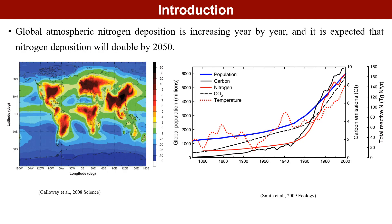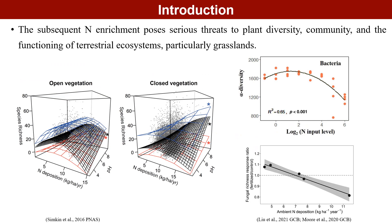Global atmospheric nitrogen deposition is increasing year by year, and it is expected that nitrogen deposition will double by 2050. Nitrogen enrichment caused by nitrogen deposition poses a serious threat to plant diversity, communities, and the functioning of terrestrial ecosystems. Ecosystem function is related not only to changes in plants but also to the dynamics of soil microorganisms in response to nitrogen inputs.